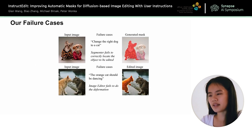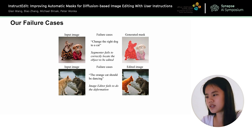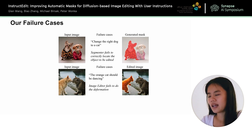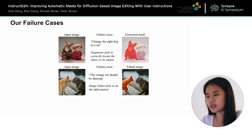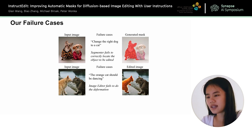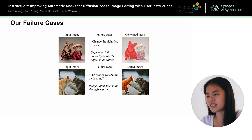But our method also has some limitations. Since it directly adopts pre-trained models, it also inherits their limitations. For example, the segmenter fails to correctly locate objects sometimes, and the image editor has difficulty performing deformation. However, our pipeline can easily integrate improvements from updated pre-trained models. So for future work, we seek to test our pipeline with different components to solve these failure cases.